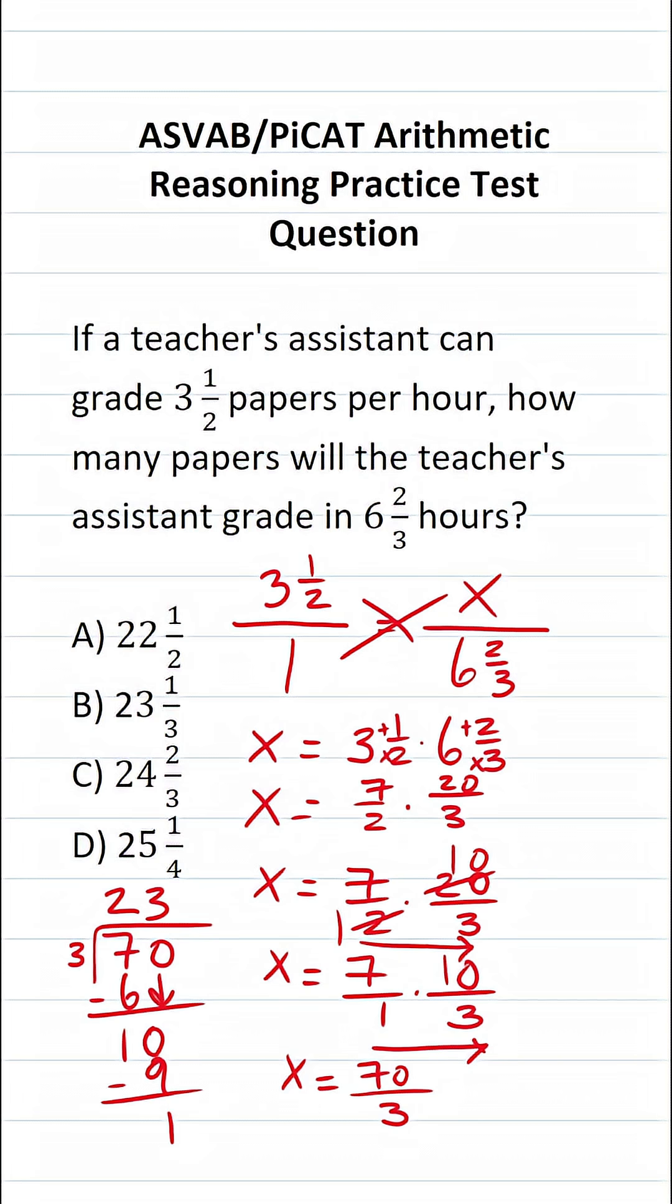In order to continue doing long division, we would have to add a decimal and so on and so forth. But in this case, we have enough information to convert this to a mixed number. This 23 is going to be our whole number. This remainder of one is going to be the numerator in our fraction, and this three is going to be our denominator.